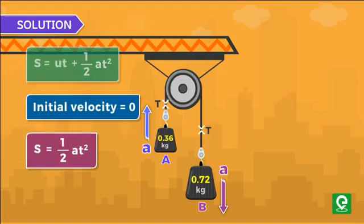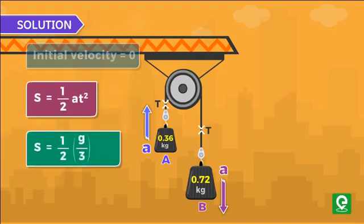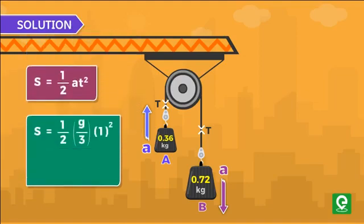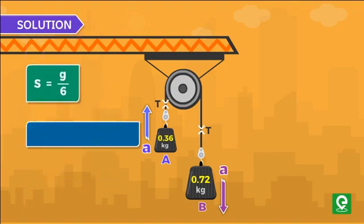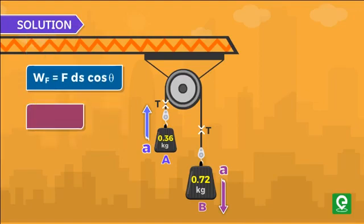On putting the value of acceleration and time, we get net displacement s equal to g by 6. Now work done by force is given by the relation F ds cos theta. Here the constant force is tension.